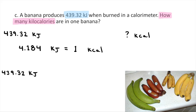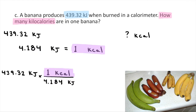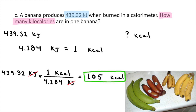Once you have your conversion factor, take the number they give you — 439.32 kilojoules — write a multiplication sign and a fraction bar. Write the units you start with on the bottom because you want them to cancel out, so kilojoules go on the bottom. Fill the fraction in with the conversion factor: next to kilojoules goes 4.184, going over the fraction bar is like crossing the equal sign, and on top put one kilocalorie. Kilojoules cancel and you're left with kilocalories. On a calculator: 439.32 times one, enter, divided by 4.184, enter — you get 105 kilocalories. That's how many Calories (with a capital C, meaning kilocalories) are in a banana.